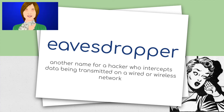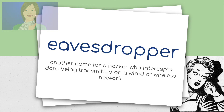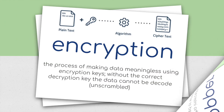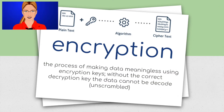Eavesdropper: another name for a hacker who intercepts data being transmitted on a wired or wireless network. Encryption: the process of making data meaningless using encryption keys. Without the correct decryption key the data cannot be decoded.